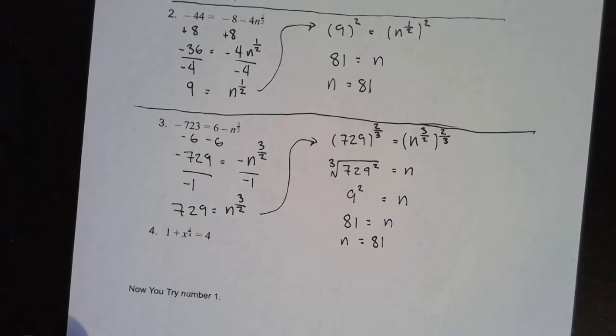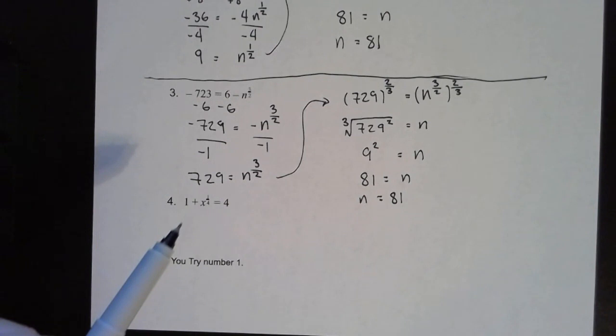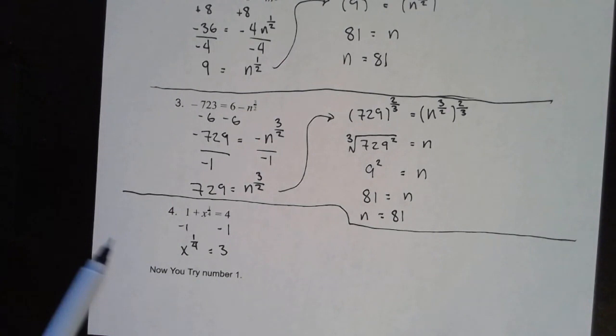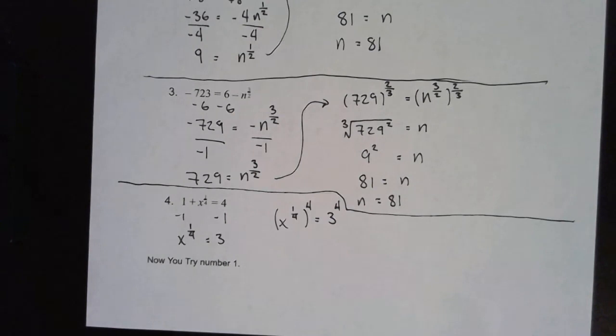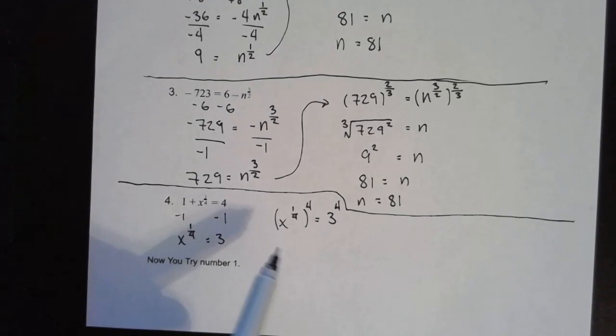We have one more example before we get to the u-tries. Here we have 1 plus x to the 1 fourth power equals 4. First thing we want to do is get x to the 1 fourth power by itself, so we have x to the 1 fourth power equals 3. Now all we need to do is get rid of this 1 fourth. To do that, we need to raise both sides to the fourth power — 4 is the reciprocal of 1 fourth. When I multiply these exponents together I get x to the first power, and on the right side we have 3 to the fourth power.